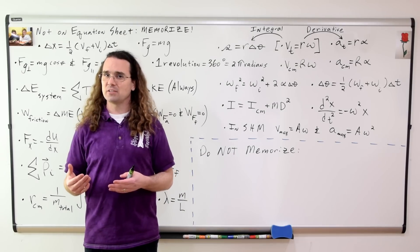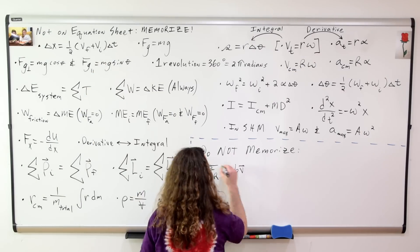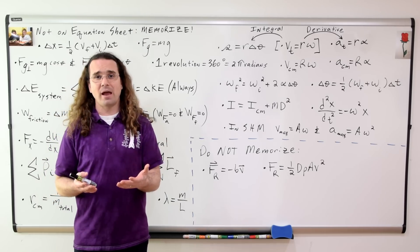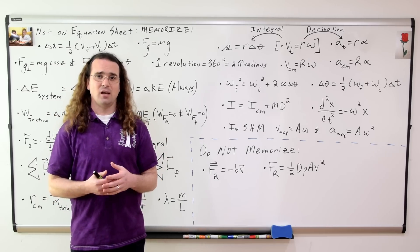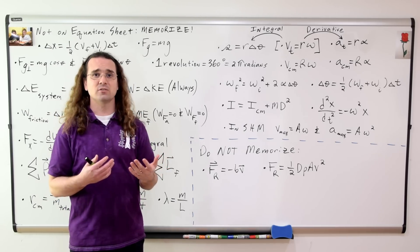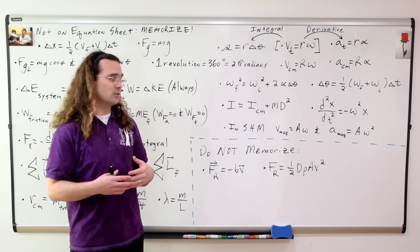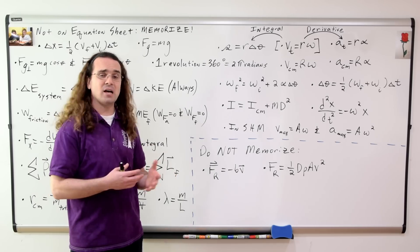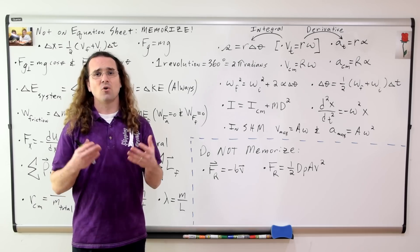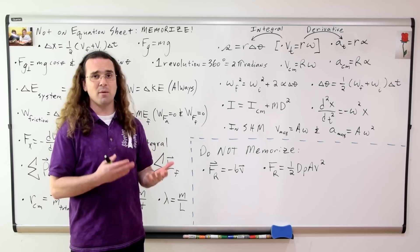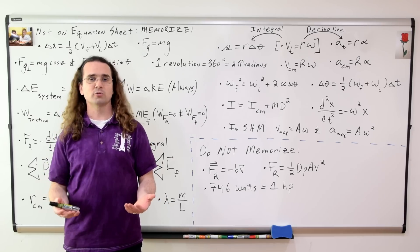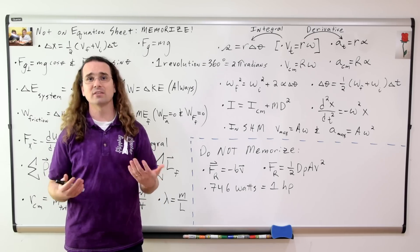I would also like to talk about some things which you should not memorize. These are the two equations for the resistive force, or the force of drag acting on an object as it moves through a fluid. If the AP exam writers want you to use one of these equations, they will either give it to you, or they'll tell you the force is proportional to the velocity, or proportional to the square of the velocity. Please do not memorize these equations. The relationship between watts and horsepower — again, if they want you to use it, they will give it to you.